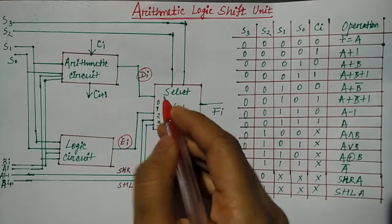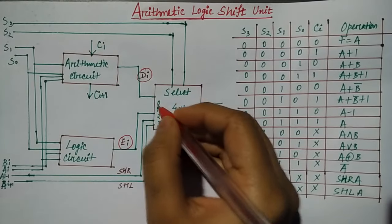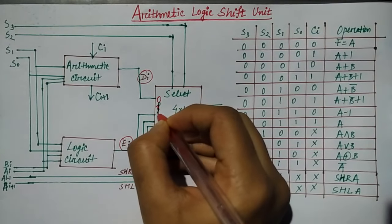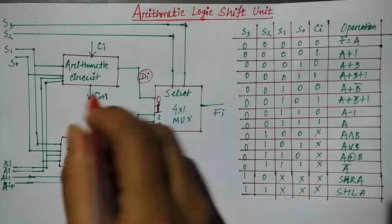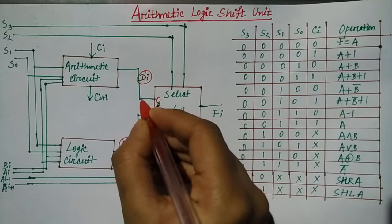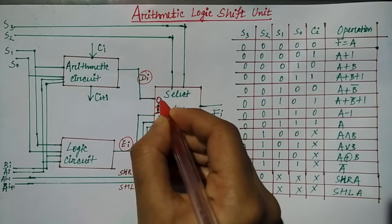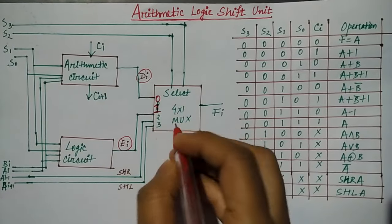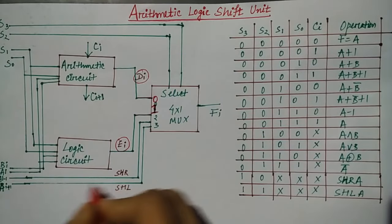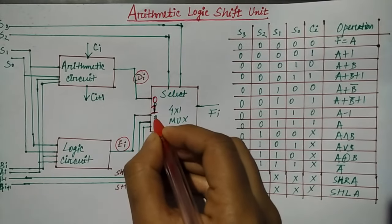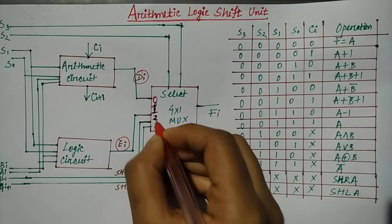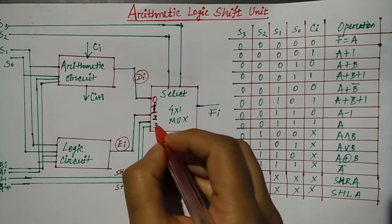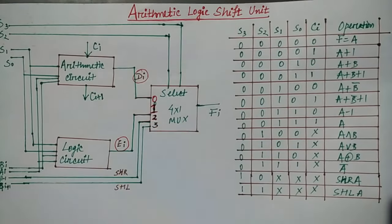One input for the multiplexer. This output of arithmetic DI is the 0th value. EI value is 1. Shift right is for value 2 or pin 2, and shift left is for 3.